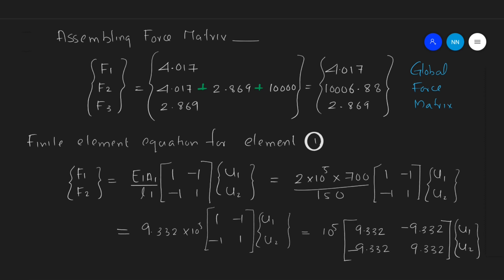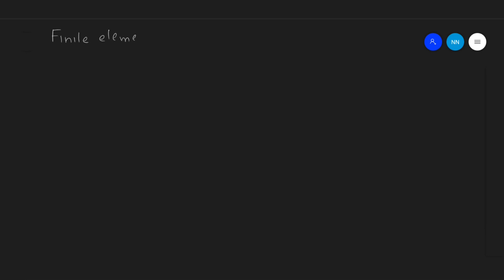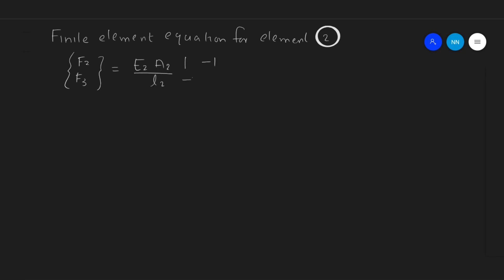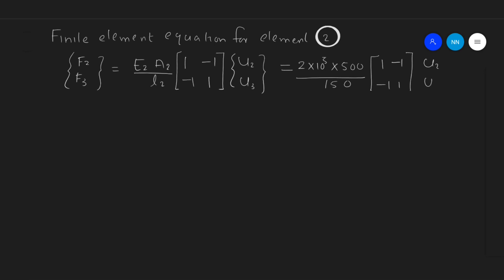For element number 2, which consists of nodes 2 and 3: F2, F3 = (E₂A₂/L₂) × [1, -1; -1, 1] × [U2, U3]. Substituting the values for Young's modulus, area of cross-section, and length yields 6.666×10⁵ × [1, -1; -1, 1] × [U2, U3].